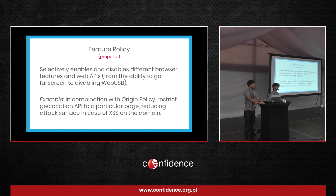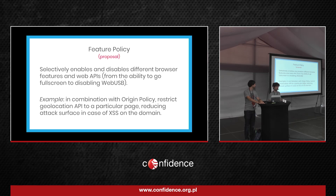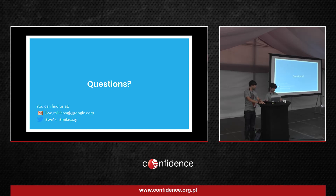Another one is feature policy. It allows the web developer to selectively enable and disable different browser features and APIs such as going full-screen, using geolocation, or using WebUSB. In combination with origin policy, it's very good for restricting — for example, geolocation to a specific search-on-map action. You need geolocation only on one action, so you say explicitly you'll only need it there. An XSS on any other page will have a harder time getting the user's location because it will be hard-disabled on other pages. It's not a hard security boundary — you could try lateral movement — but it hardens the application and raises the bar. If you have any questions about CSP or the new stuff, please ask us. Thank you.